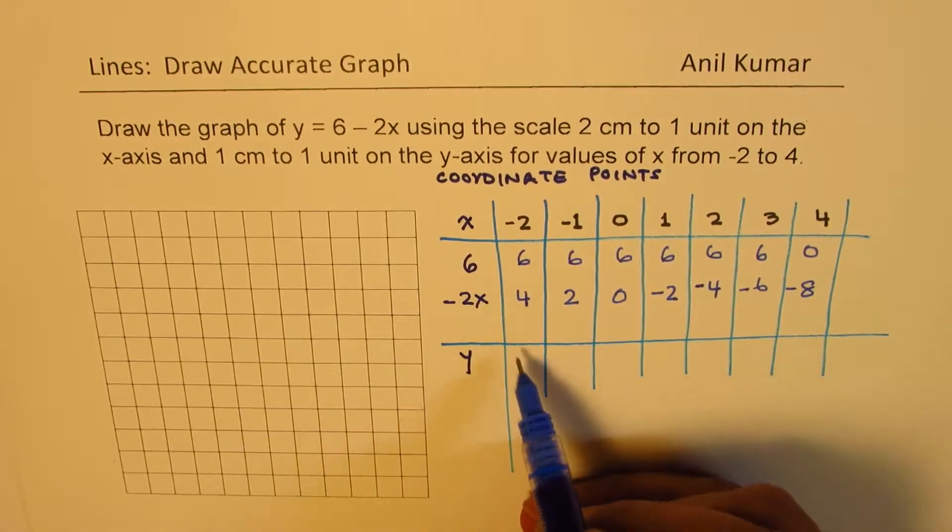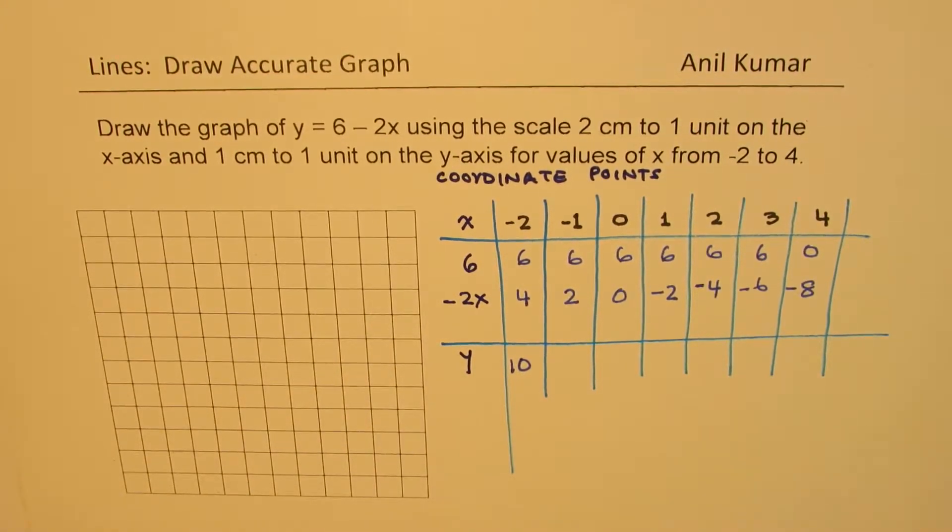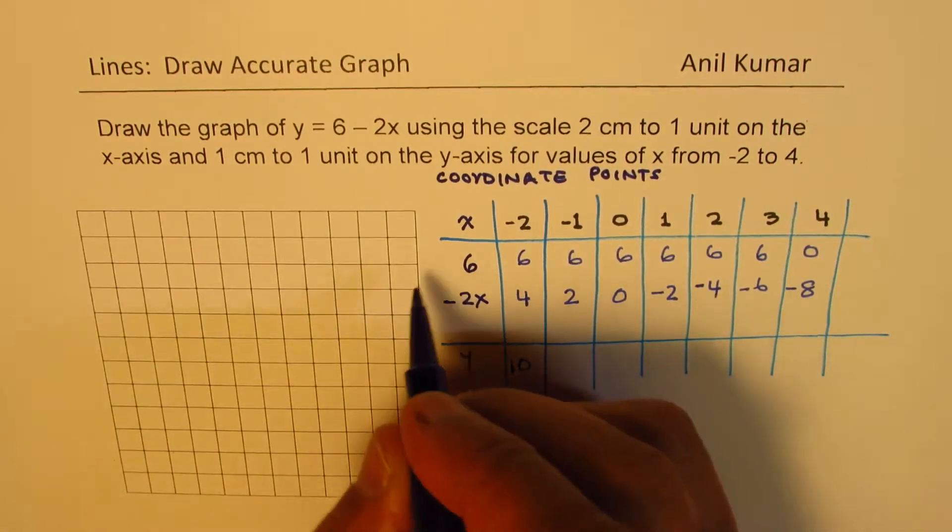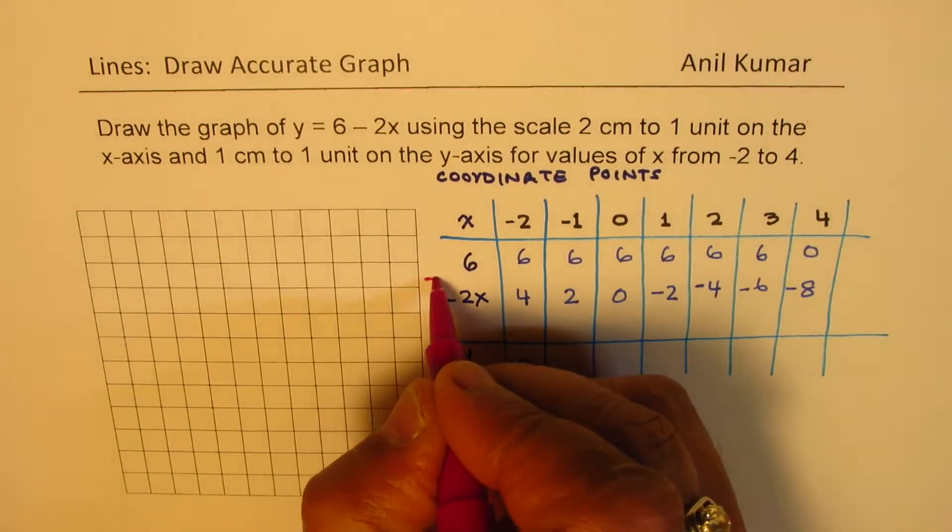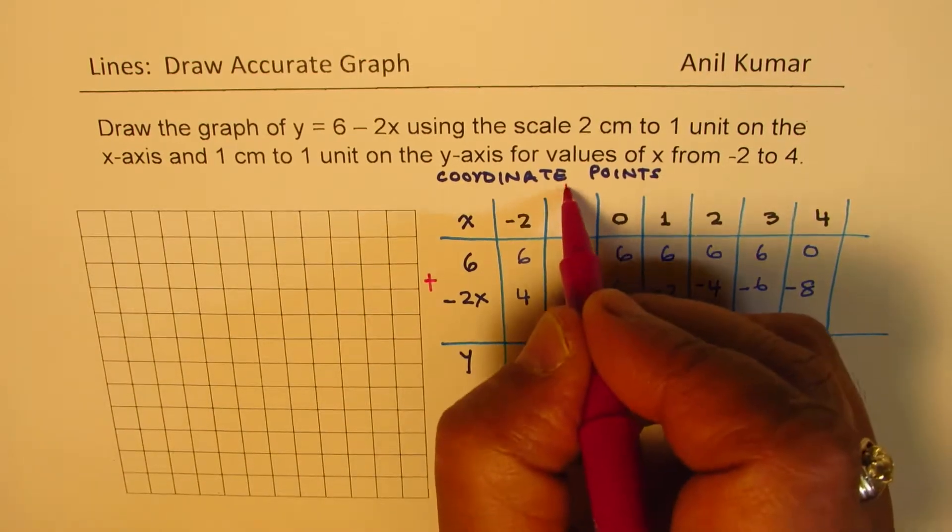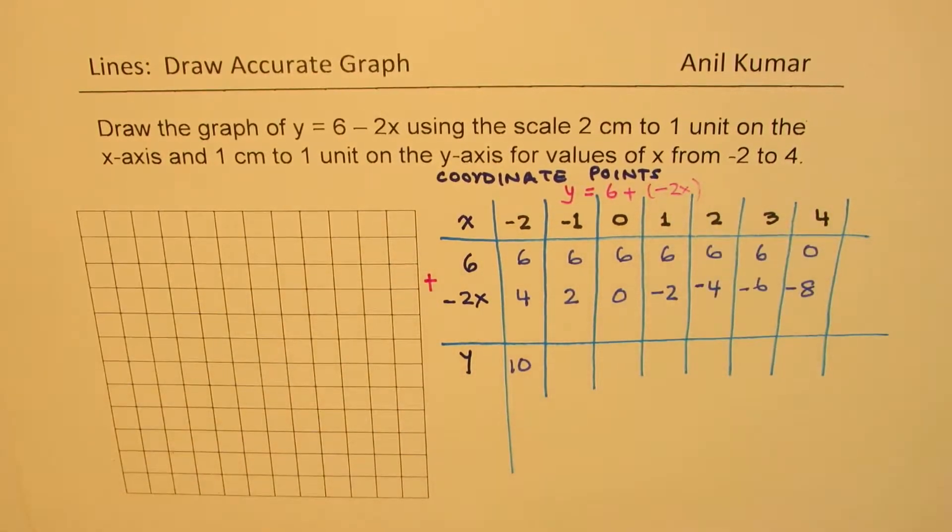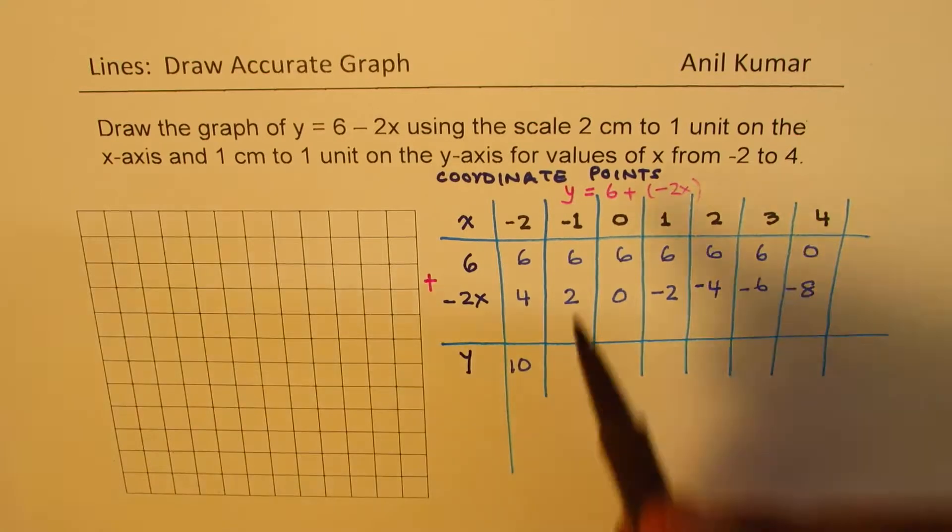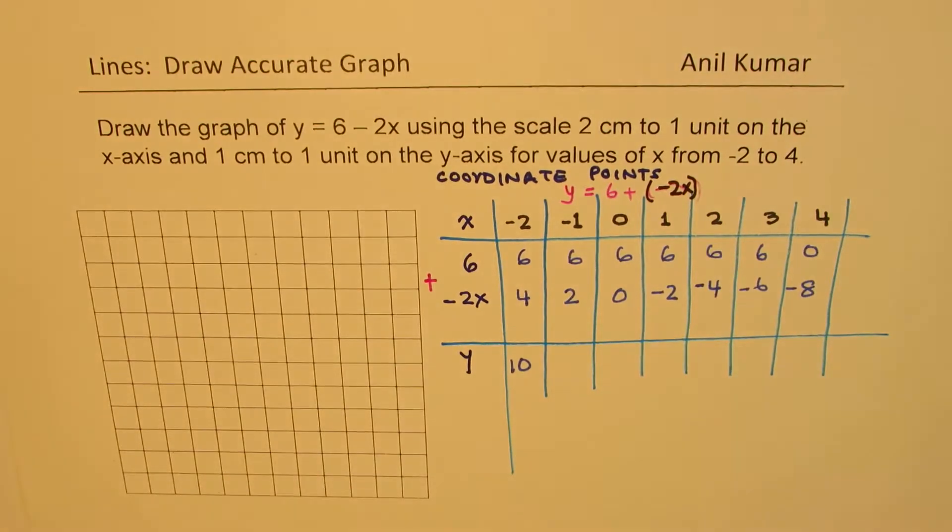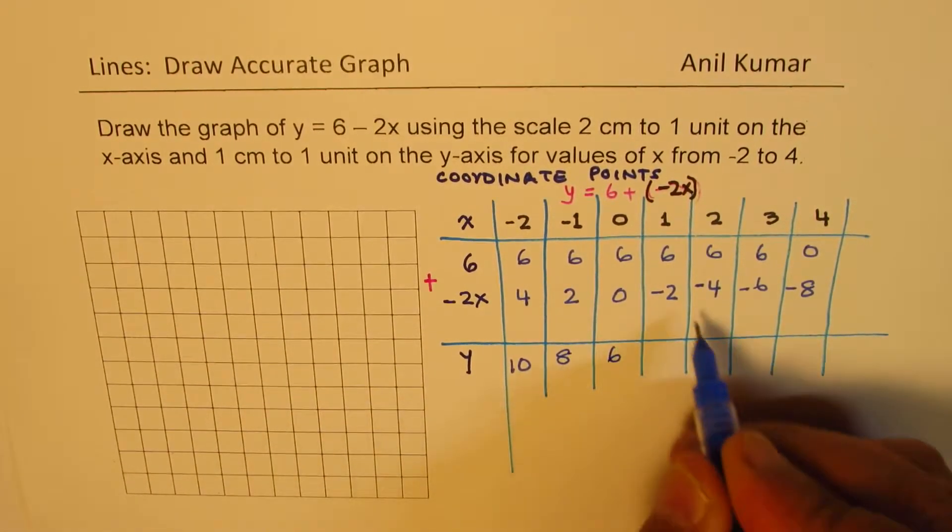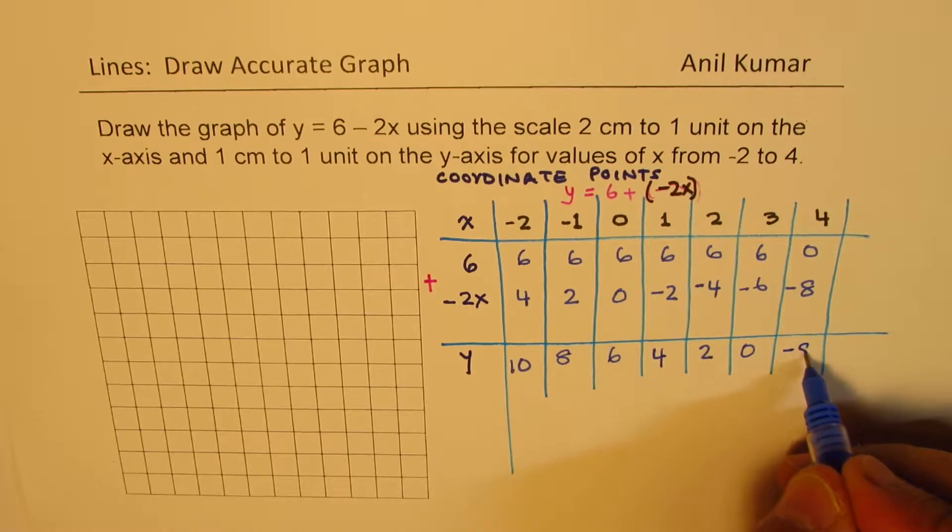So if I add them, what do I get? 6 plus 4 is 10. So that's what we have. So we have 10 here, just add them. So think like this. You are doing minus 2x, but overall, you are adding these numbers. So the equation is y equals to 6 plus minus 2x. So add them now. So when you add, you get 8, 6, here we get 4, 2, 0, and this is minus 8.